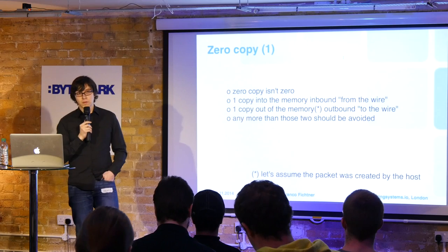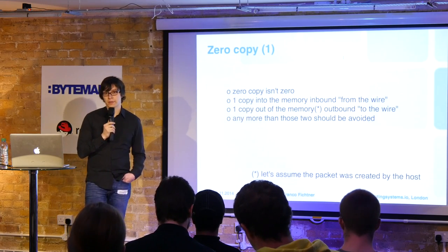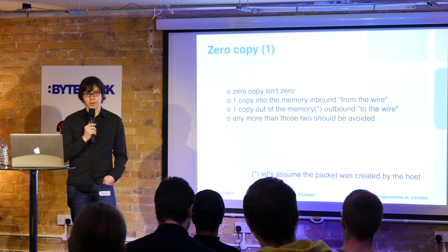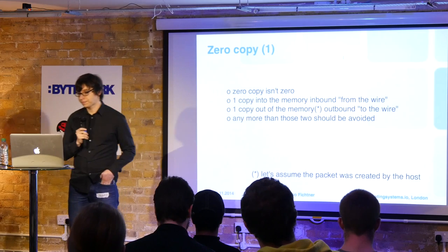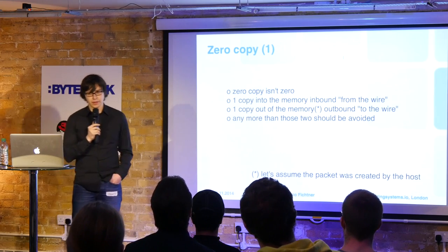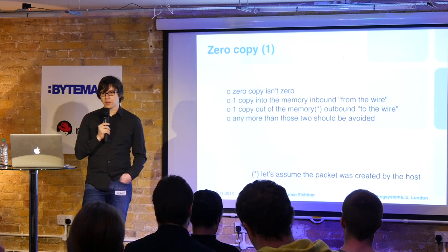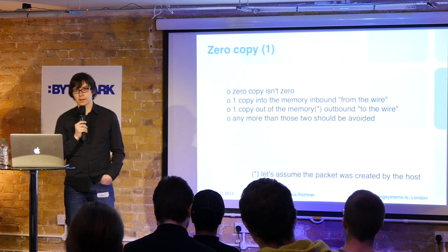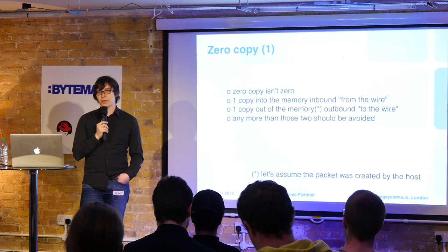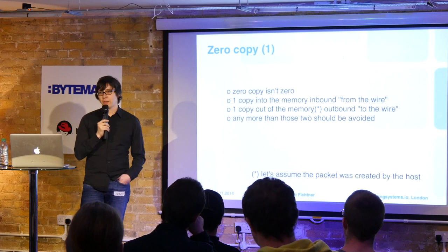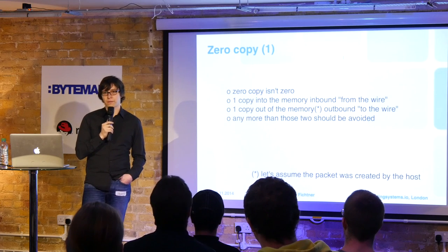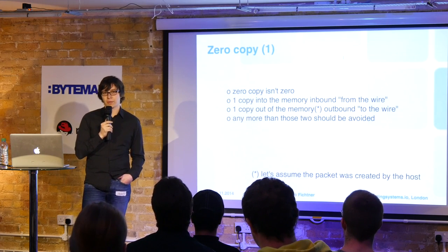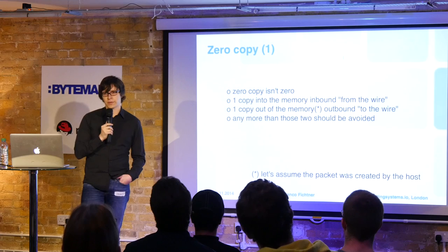What all frameworks do is guarantee zero copy through all of their subsystems, but if you leave those subsystems you end up with another copy. The important thing about copies is: if you copy every packet you receive once, you end up with a full bandwidth's worth of extra traffic. If you're on a 10G link and copying every packet, you're causing 10G of extra internal traffic through your system — that's something you want to avoid.